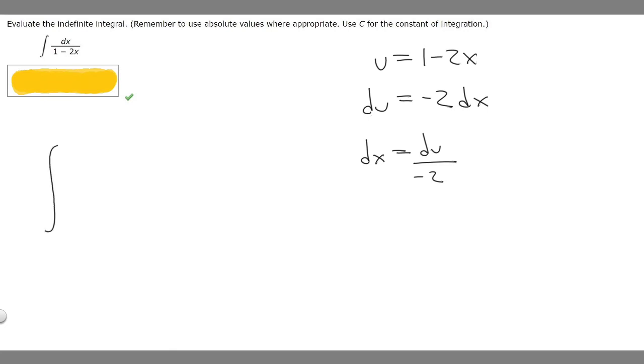Now what we want to do is just rewrite it. I'm going to move the dx over right here. And then what we want to do is replace 1 minus 2x with u. So now we have 1 over u and then we replace dx with what we solved dx to be, so du over minus 2.